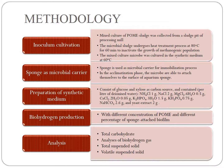For the Methodology, there are five steps: inoculum cultivation, sponge as microbial carrier, preparation of synthetic medium, biohydrogen production, and finally analysis. For inoculum cultivation, a mixed culture of POME sludge was collected from a sludge feed at a processing mill. The microbial sludge undergoes heat treatment at 80 degrees Celsius for 60 minutes to inactivate the methanogenic population. The mixed culture of microbes was then cultured in synthetic medium at 60 degrees Celsius. Sponge is used as microbial carrier for the immobilization process. In the acclimatization phase, the microbes are able to attach themselves to the surface of the aquarium sponge. Four analyses were conducted: total carbohydrate, analysis of biohydrogen gas, total suspended solid, and volatile suspended solid.